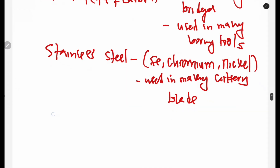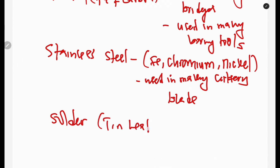We also have solder, which is an alloy of tin and lead. Solder is used in making soldering wires. These are some of the key examples of alloys.